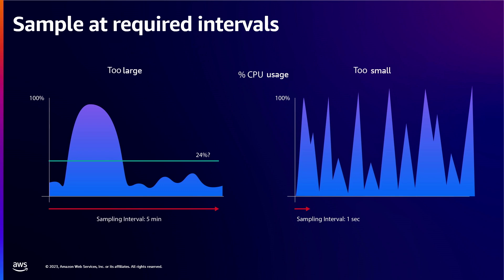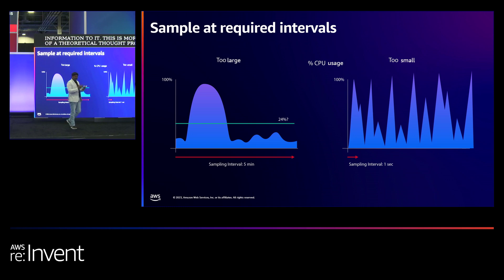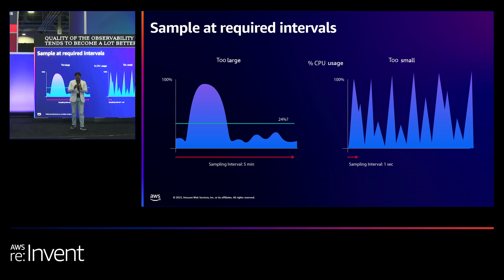There is a widespread assumption that observability tends to become a lot better when you actually add more information to it. This is more of a theoretical thought process, but when you think about it from practical experience, it is not always true. The quality of observability tends to become a lot better based on sampling the right data at the right intervals of time.